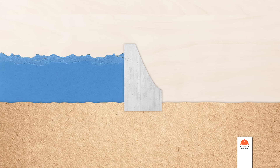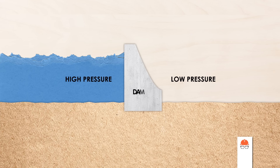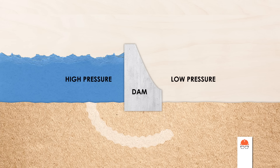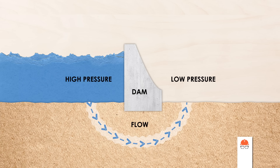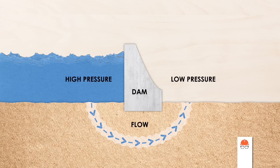If you've ever built a dam on a creek, or even in the storm gutter on your street, you know how hard it is. Water is not only powerful, it's elusive too — it seems to always find a way through. Like all fluids, water flows from areas of high pressure to low pressure, and a dam is essentially a structure which separates those two conditions. This is a prime circumstance to induce flow, whether it's through the dam itself or underneath through its foundation.